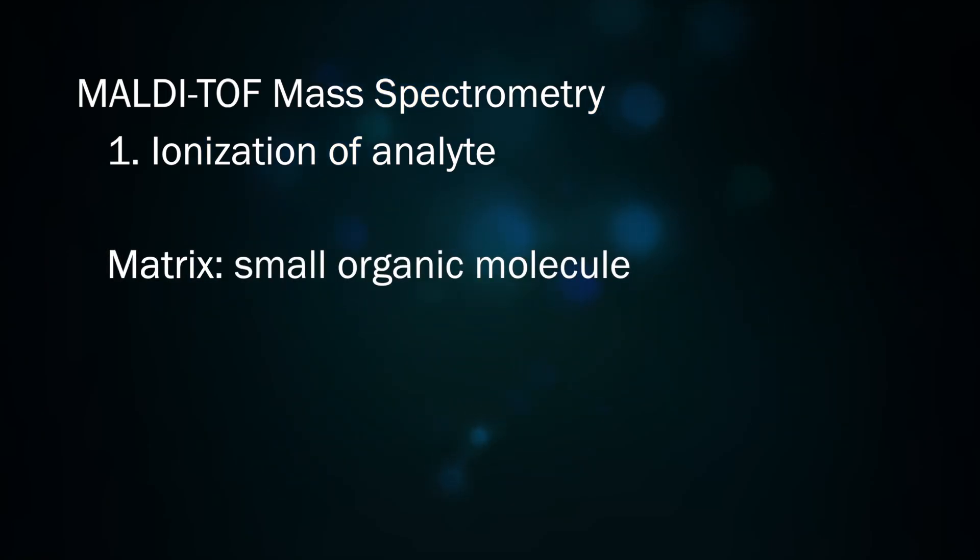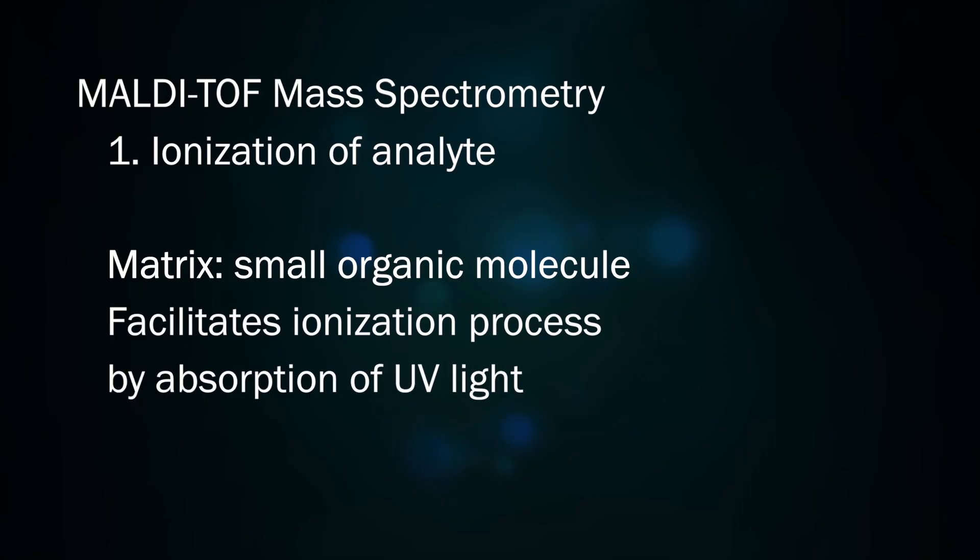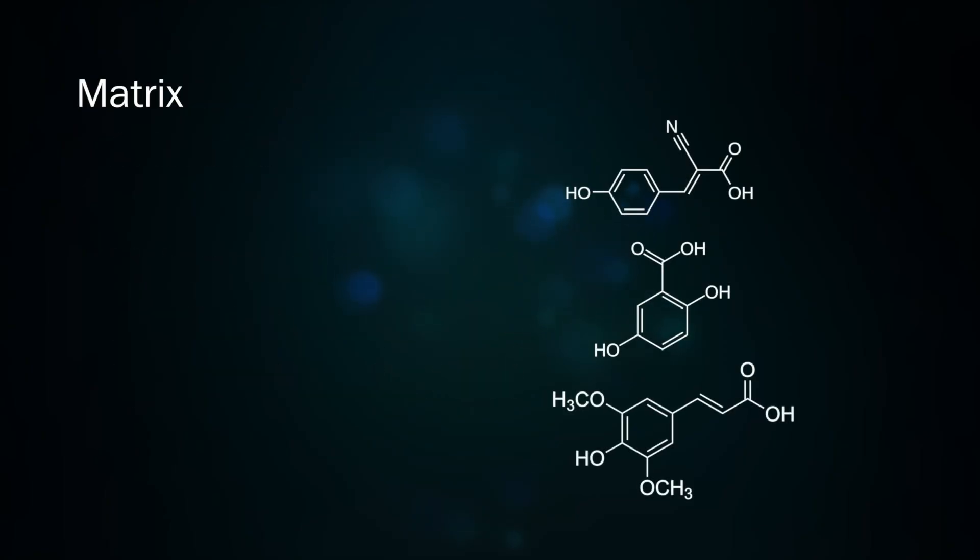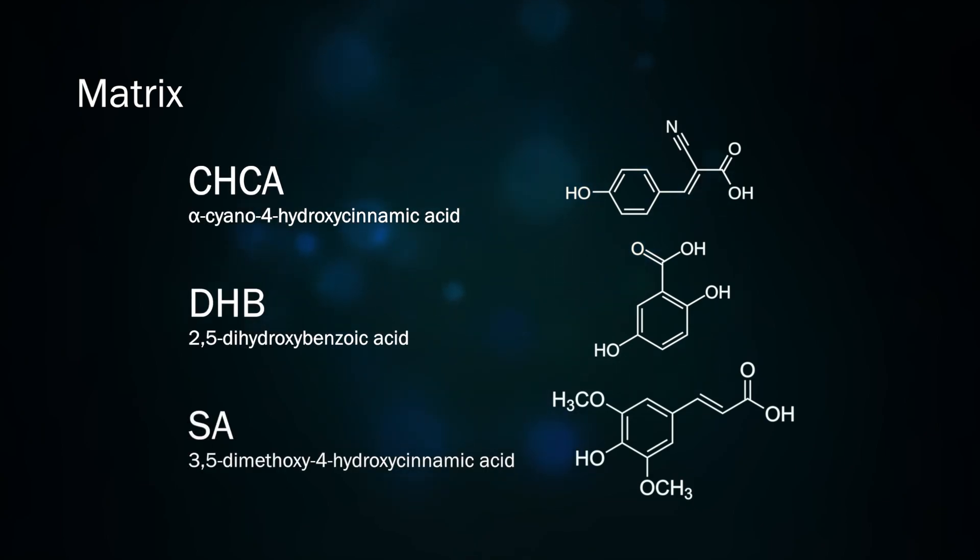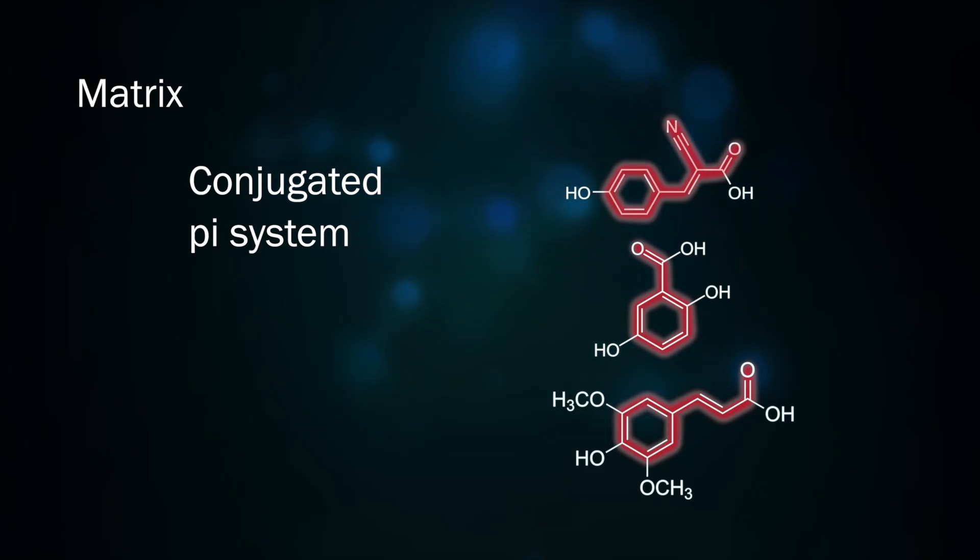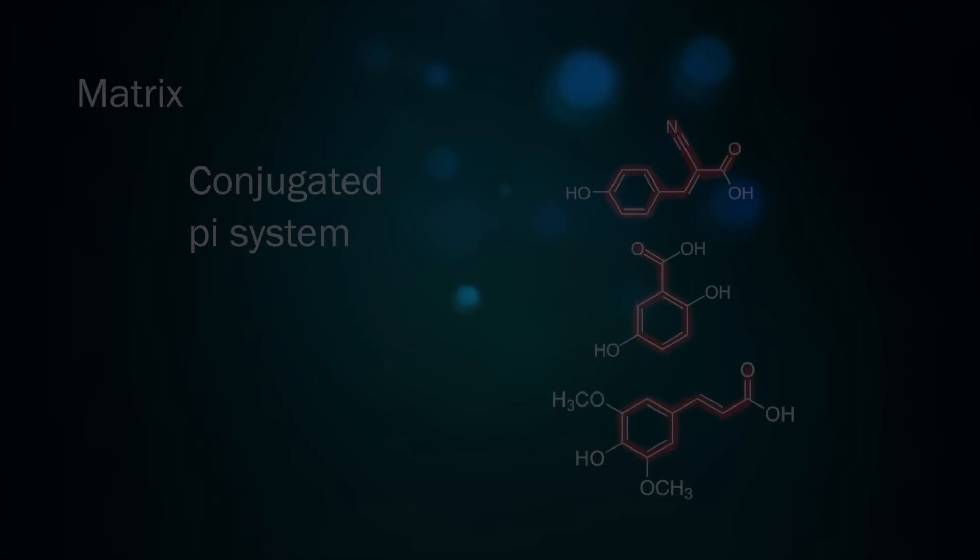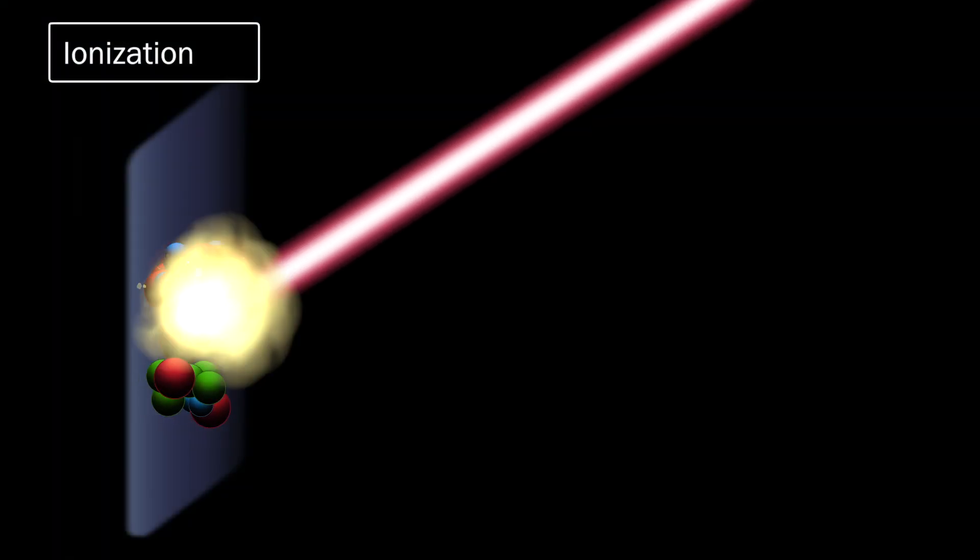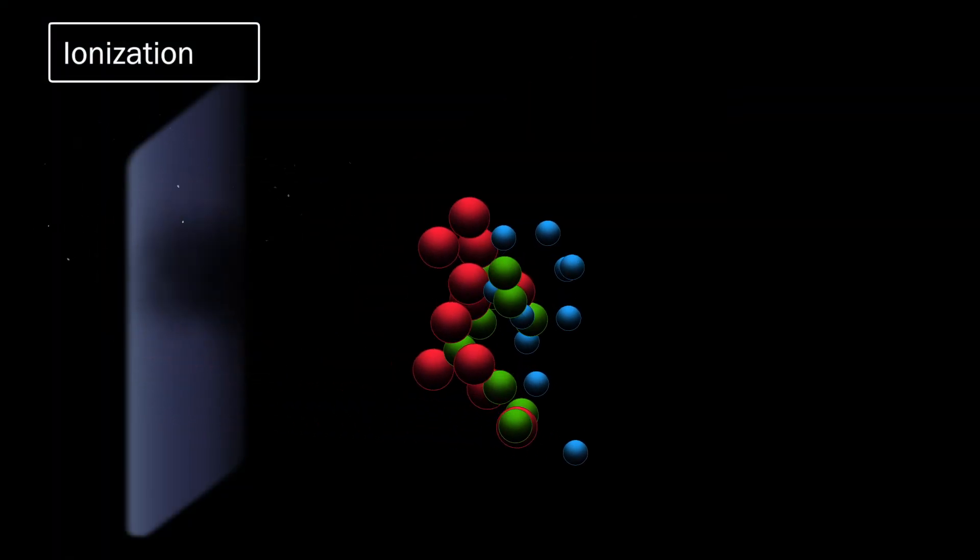The matrix is a small organic molecule used to facilitate the ionization process. A few common examples are shown here such as CHCA, DHB, and SA. Common to all matrix molecules is a conjugated pi system like a benzene ring and attached functional groups. This conjugated pi system is able to absorb energy in the form of UV light and blast the analyte molecules into the gas phase.